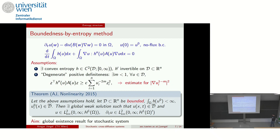Under these assumptions, with D bounded (though not always necessary), the initial data satisfying regularity and boundedness conditions, there exists a solution to the deterministic system with regularity in the Sobolev-Bochner spaces.